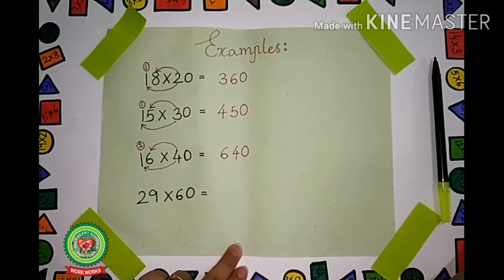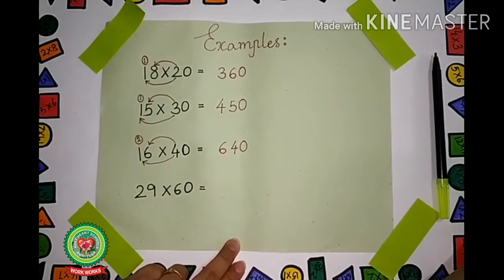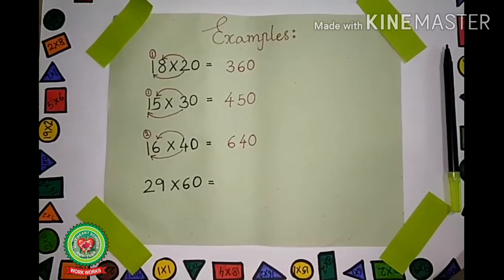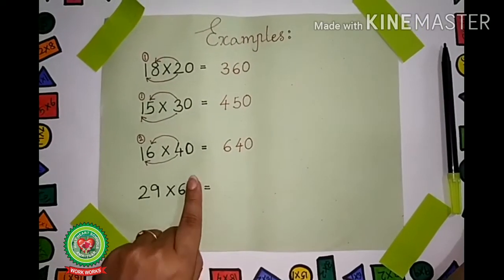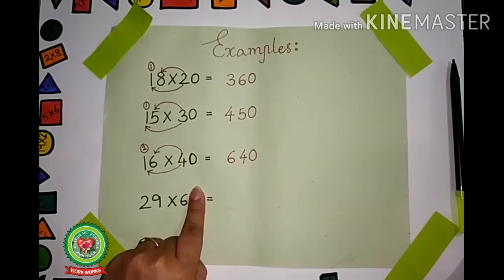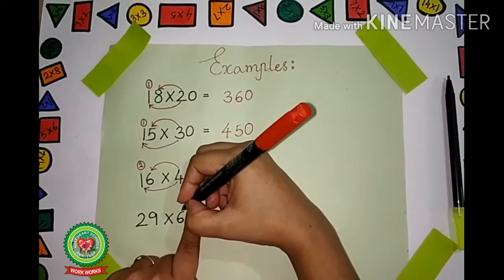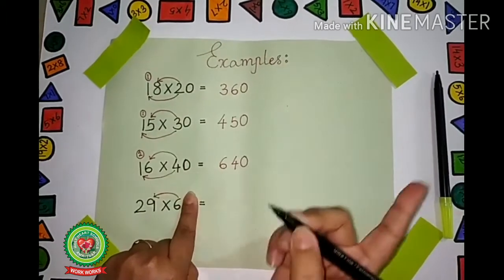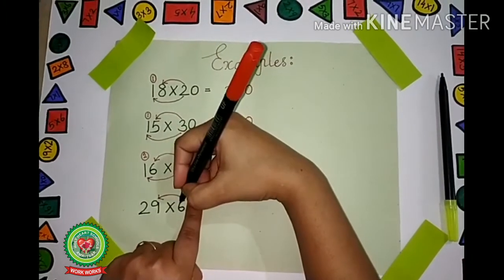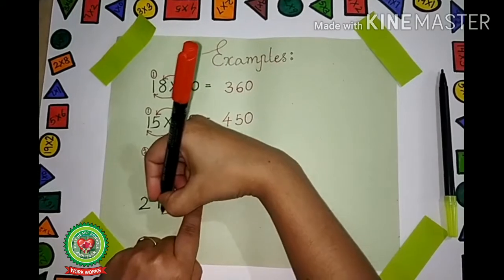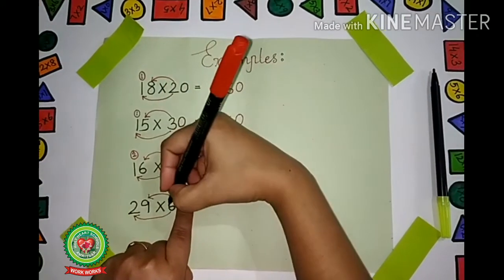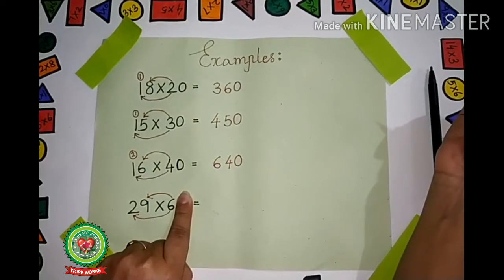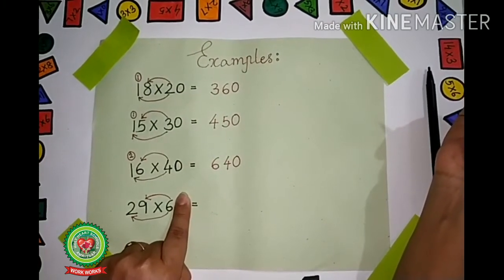29 × 60. Read it again with me: 29 × 60. Now again take your finger and hide the 0. We have to multiply 6 with 9 first, because it is the first digit from the right hand side, then 6 × 2. Now, what is 6 × 9? Read the table of 6 till 9. 6 × 9 is 54.